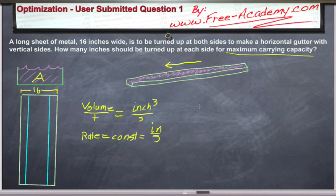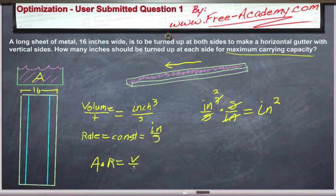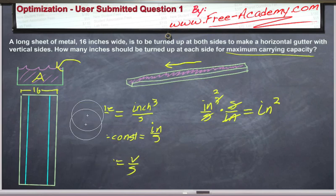So now if you take the volume flow, which is an inch cubed per second, and you divide it by the rate, you can cancel out some of these units. You can cancel out one of the inches, you can cancel out the second, and what you end up with is an inch squared. So in other words, an area times a rate gives a volume flow per second. So the larger we make the area of the cross section of the gutter, the more water can flow down this gutter.